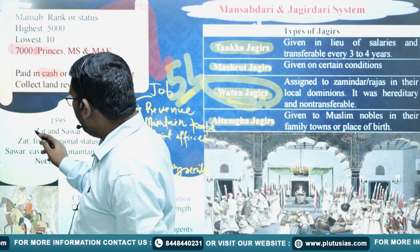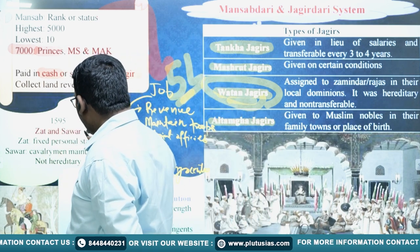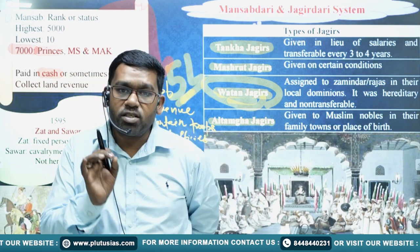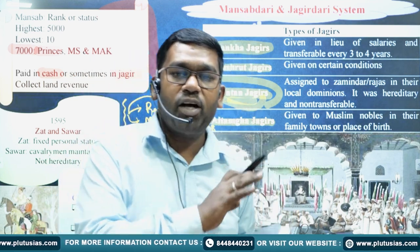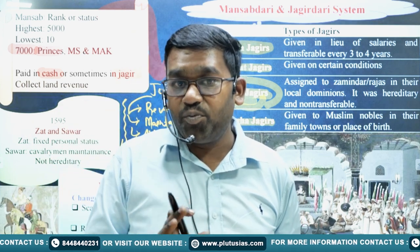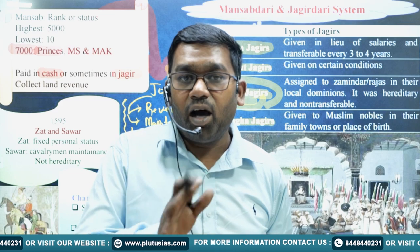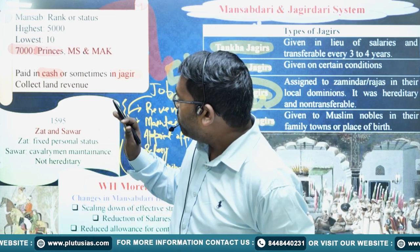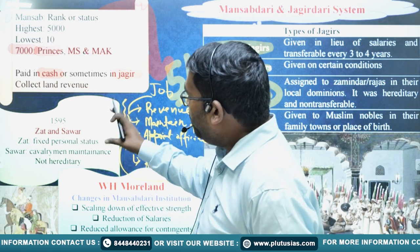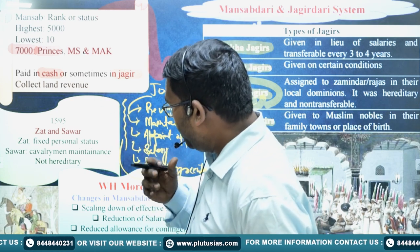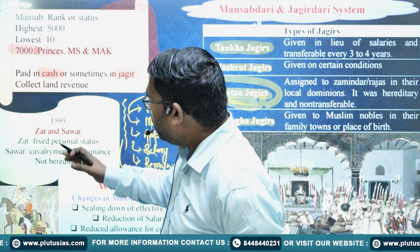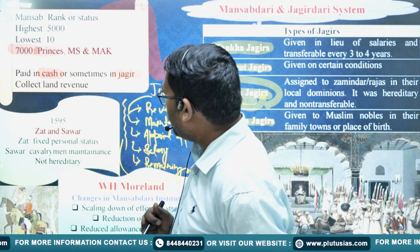Akbar said that now there would be two types of ranks. One would be Zat, which determined a person's personal status — for example, a Zat of 5,000. But you are not required to maintain 5,000 troops as before. Now, you have to maintain only 2,500 troops, though these troops must actually be maintained. In order to resolve these corruption problems, Akbar introduced two types of ranking systems: Zat and Savar.